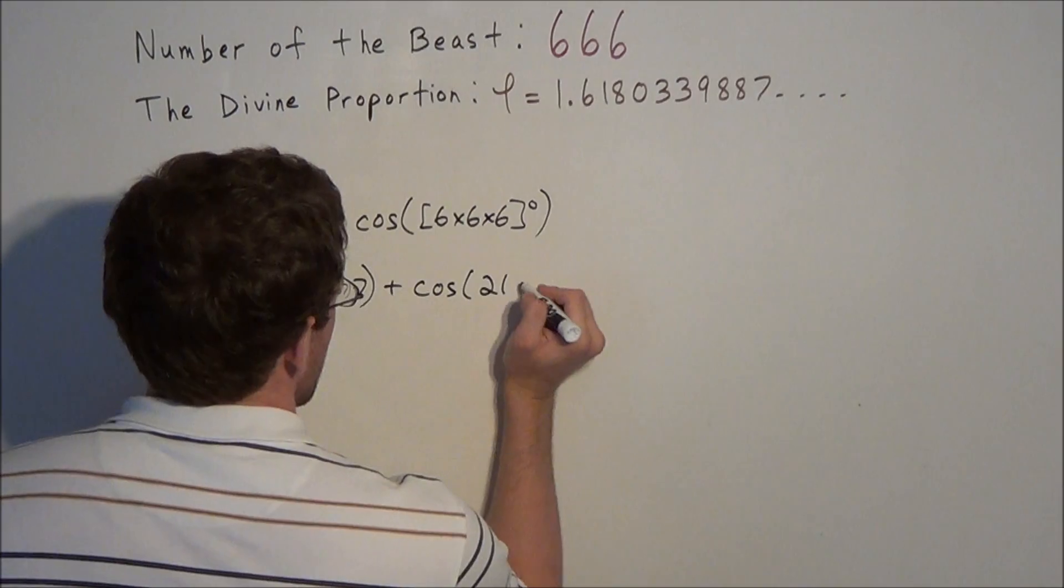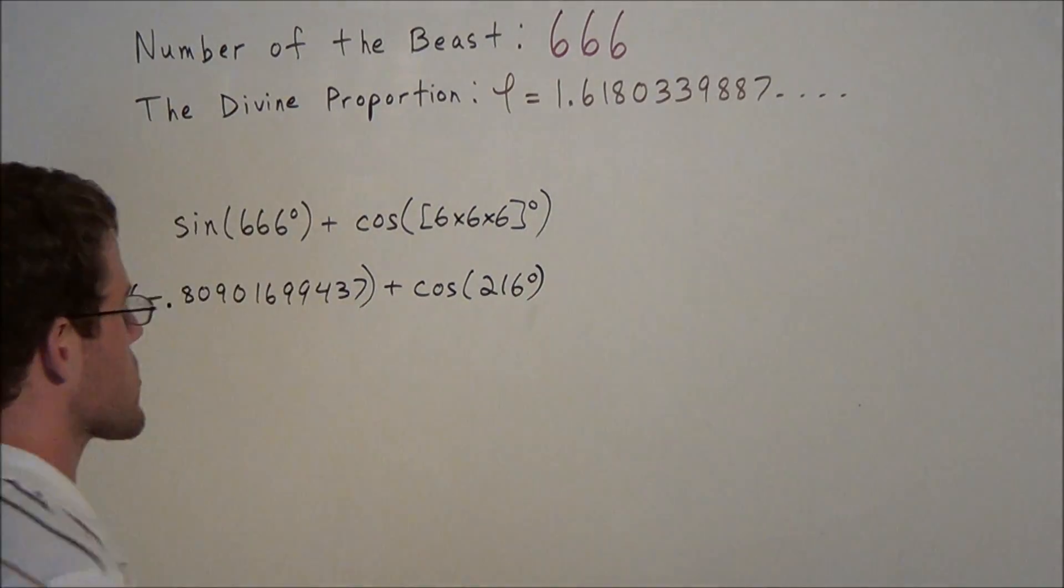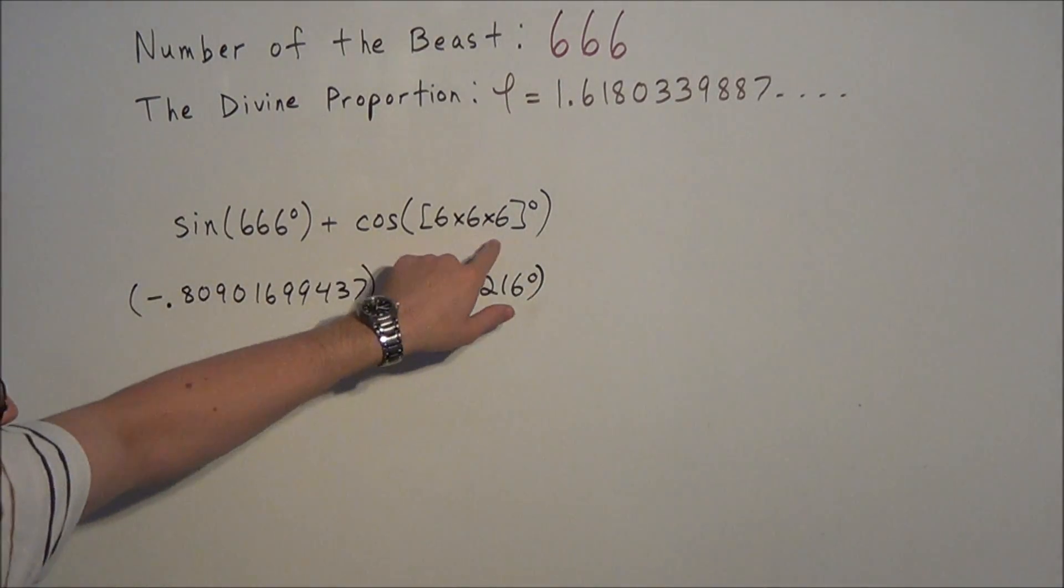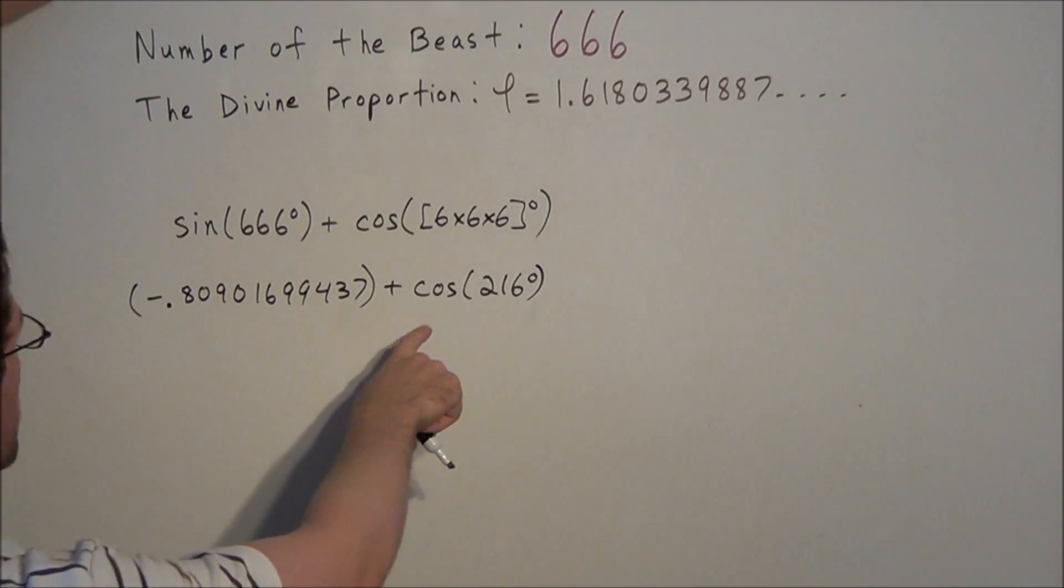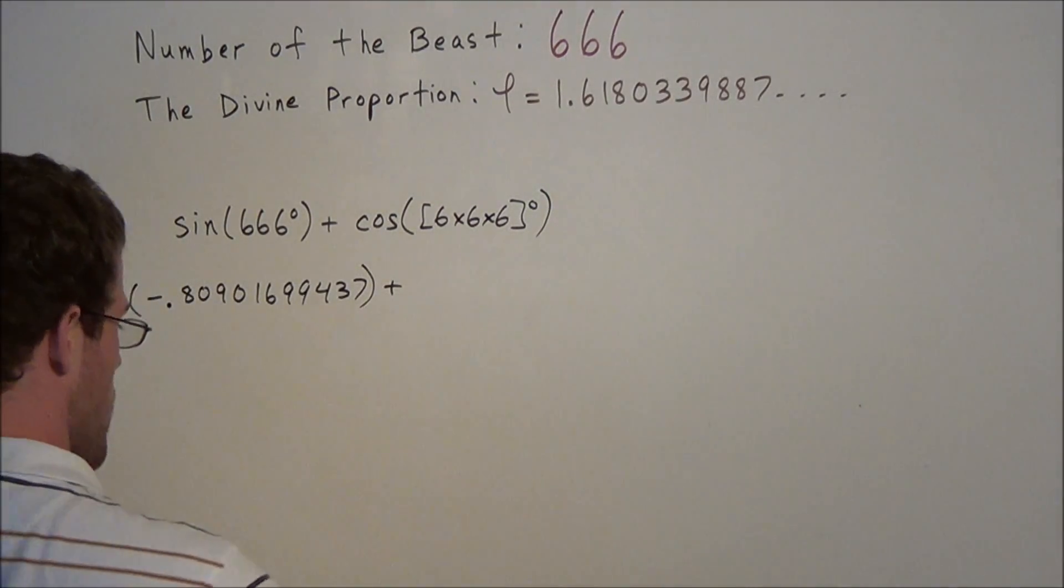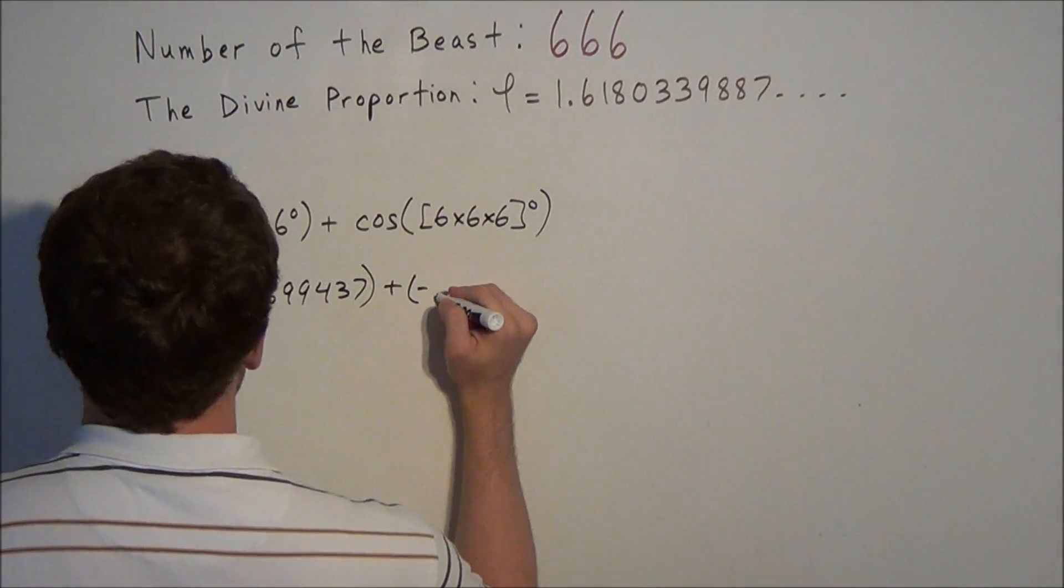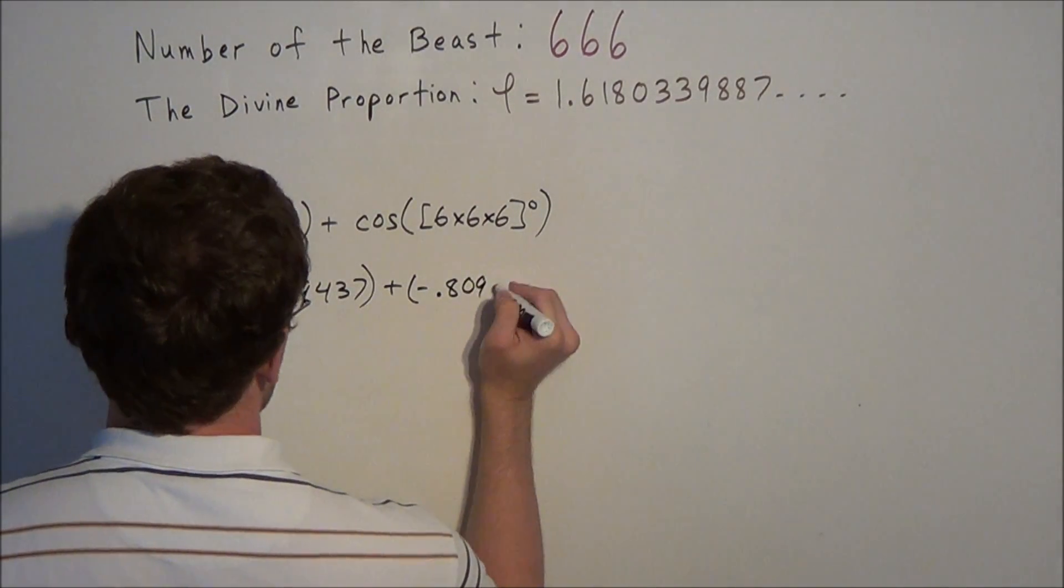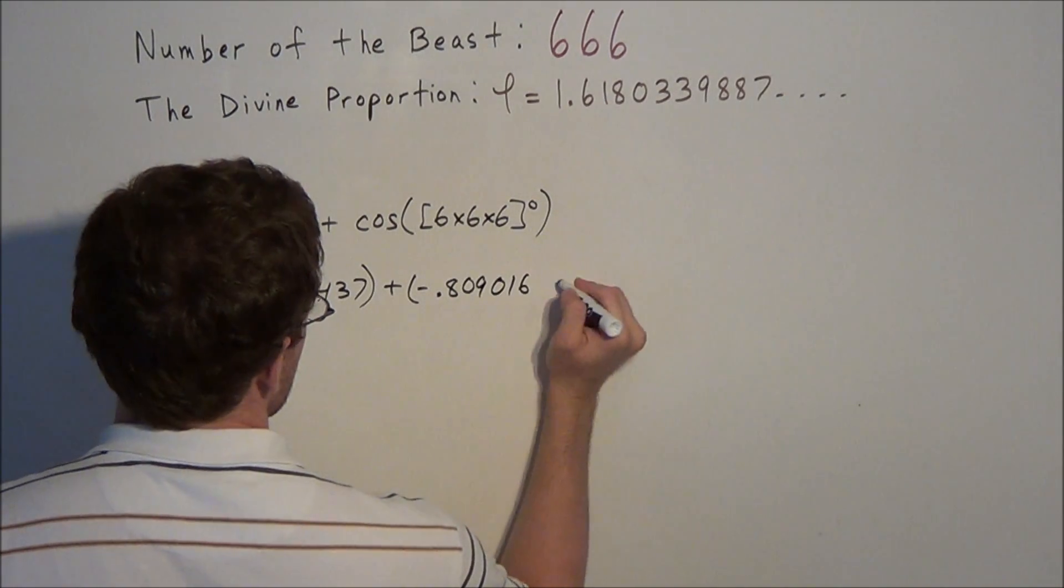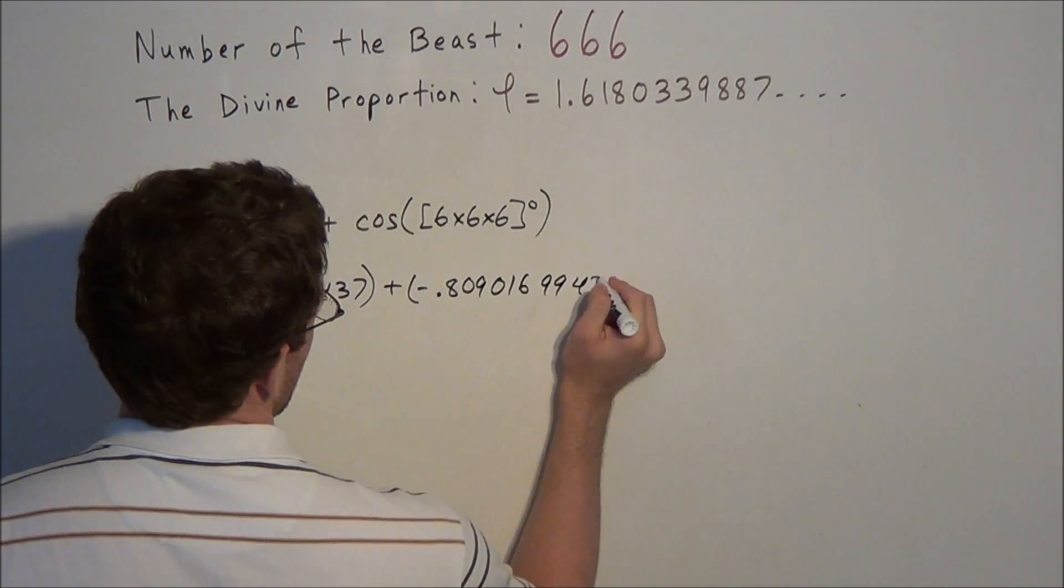That's the result of multiplying 6 times 6 times 6, and when we evaluate the cosine of 216 degrees, we should get the same thing. We get negative 0.80901699437.